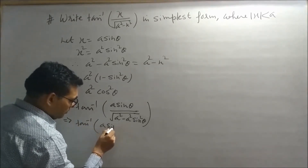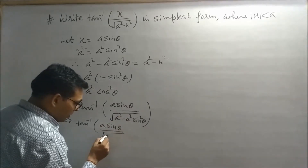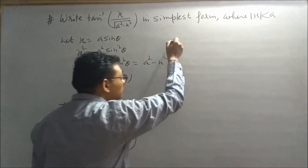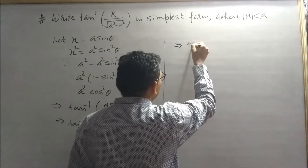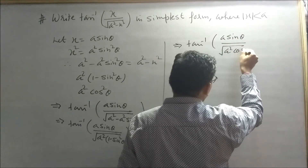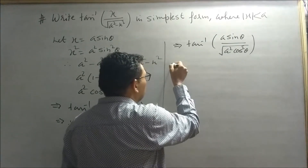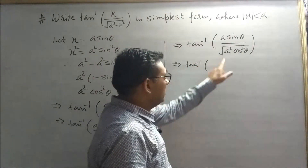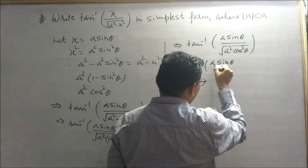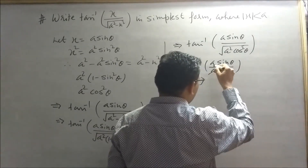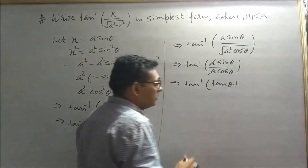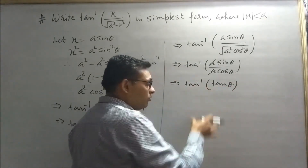So we have tan⁻¹(a sin θ / √(a² - a² sin² θ)), which implies tan⁻¹(a sin θ / √(a² cos² θ)), which simplifies to tan⁻¹(a sin θ / a cos θ). The a and a cancel out, giving us tan⁻¹(sin θ / cos θ) = tan⁻¹(tan θ) = θ.